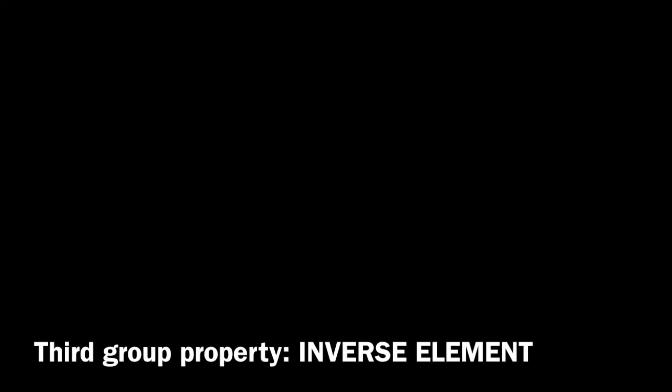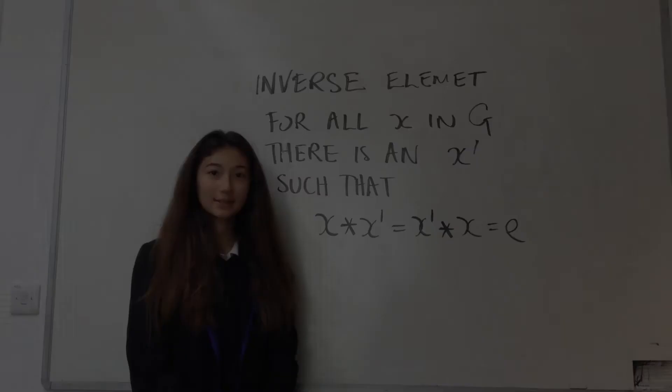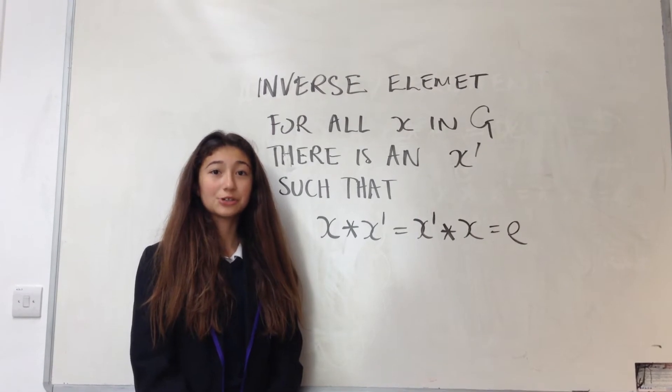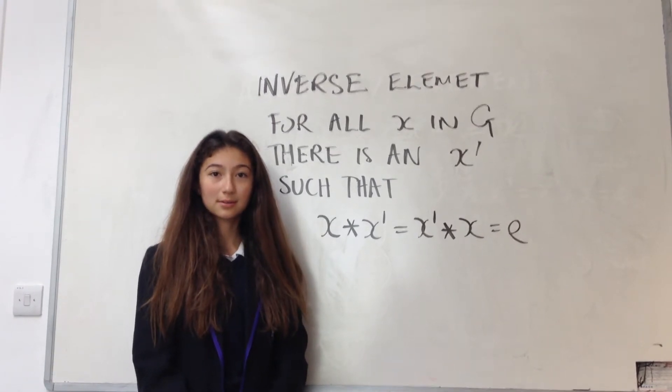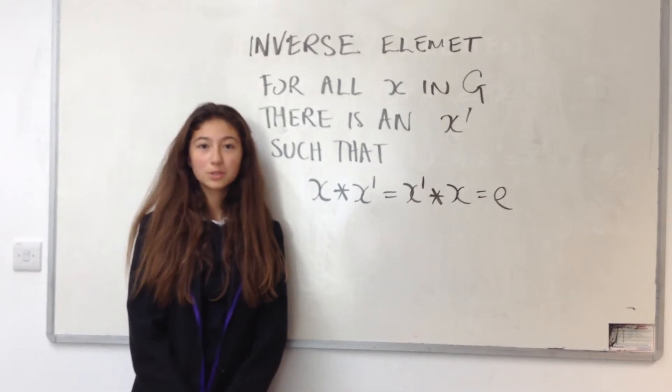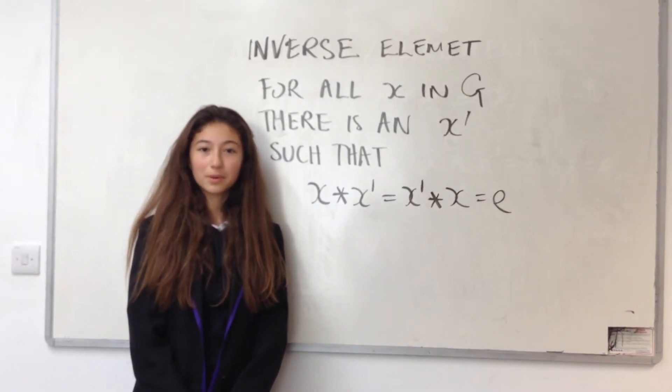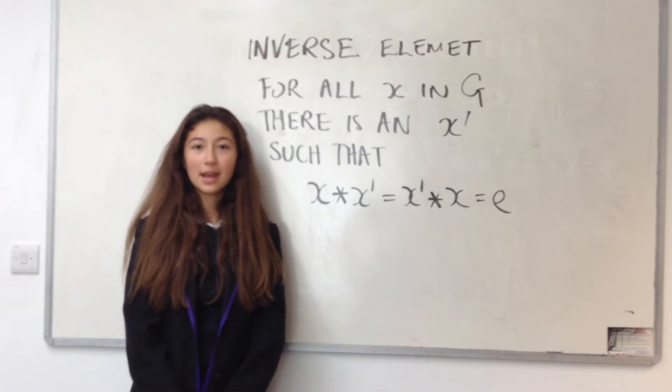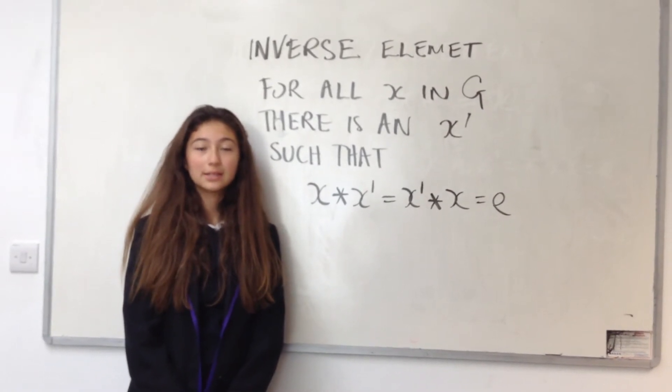Third group property, inverse element. For every element in G, there should be an inverse to it. So this means if I take any X in the group, I will also find an X prime in the group. If I combine these together in any order, I will get the identity element.